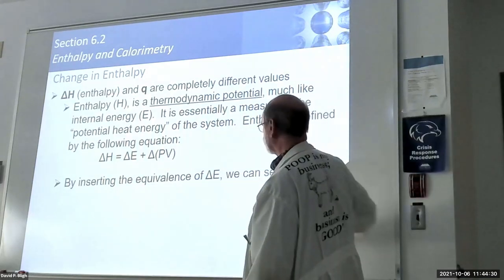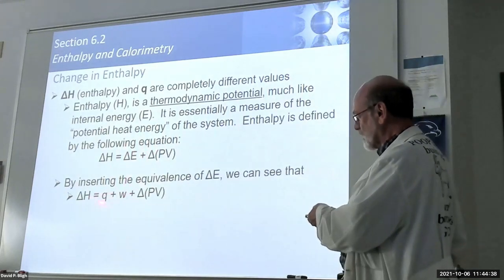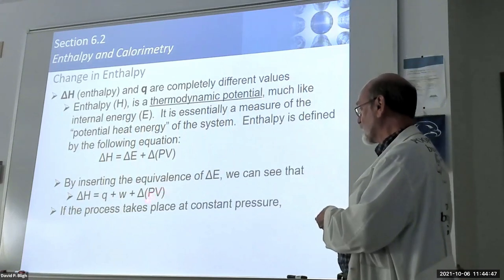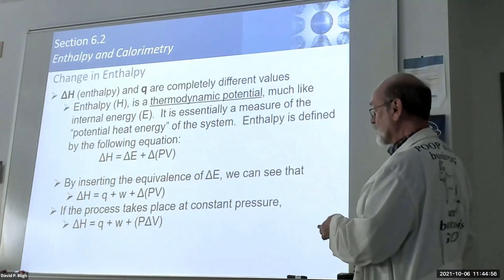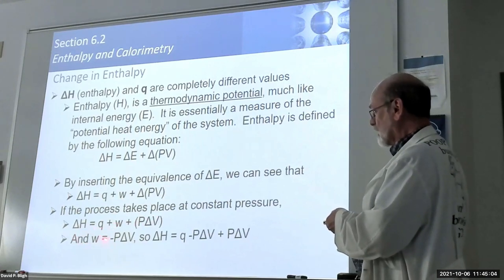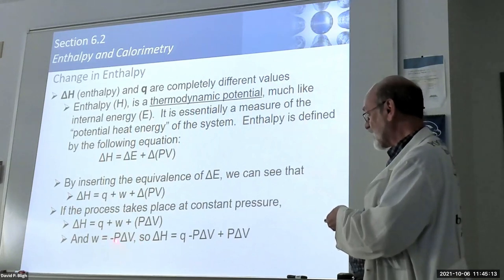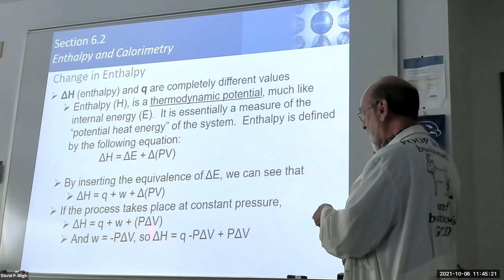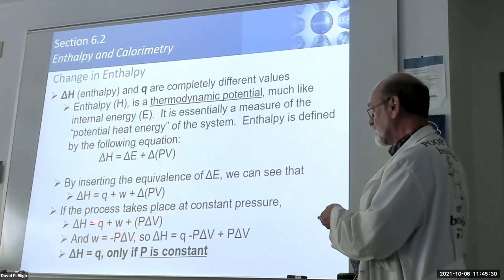To derive that delta H equals Q under certain conditions: delta E equals Q plus W, and at constant pressure, work equals negative P times delta V. Substituting into the enthalpy equation, the P·delta V terms cancel, so under constant pressure, delta H equals Q. That's where that equivalence comes from - at constant temperature and pressure, Q equals delta H.